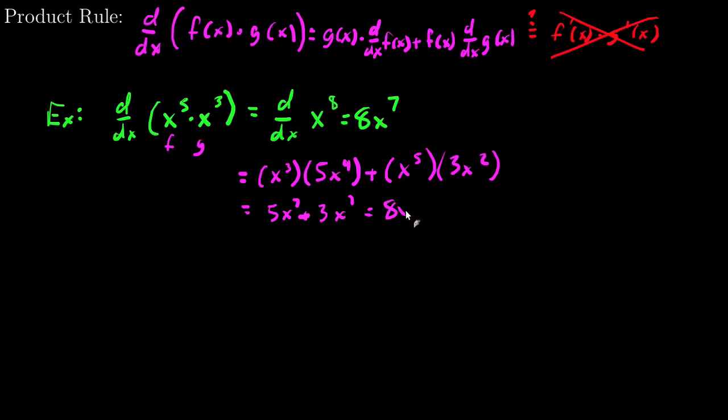which is 8x^7, just like we wanted by what we already knew was true. However, if I tried to use this rule, taking the derivative of x^5, I get 5x^4. Taking the derivative of x^3, I get 3x^2, and you can clearly see 5x^4 times 3x^2 is 15x^6. It doesn't have the right coefficient, nor does it have the correct exponent, so clearly that is not the right method.